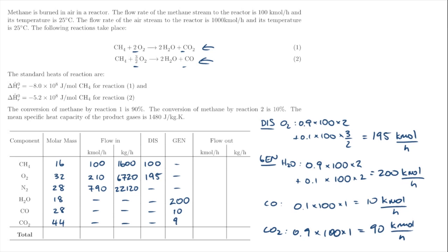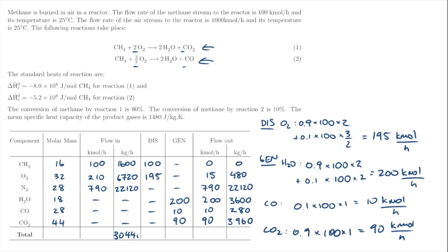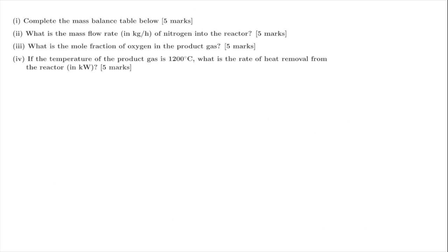We write those terms into our mass balance table. The flow out terms are calculated as flow in minus disappearance plus generation. We multiply the flow out by molar mass to get mass flow out. We compare the sum of mass flows in and out on both sides of the mass balance table — total mass is a conserved quantity so those numbers should agree.